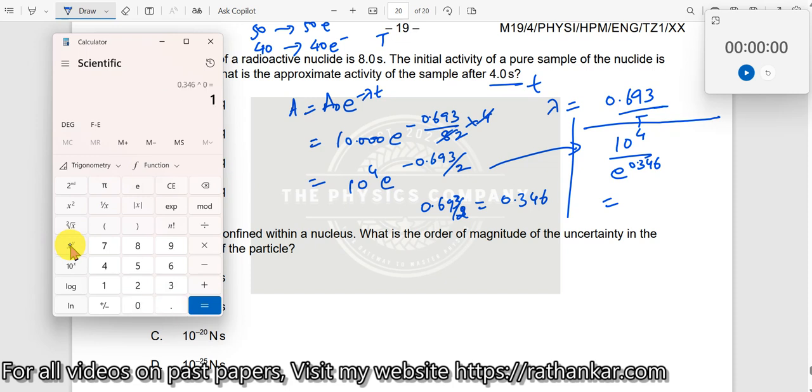I get this as... E to the power of 0.346 is 1.413.